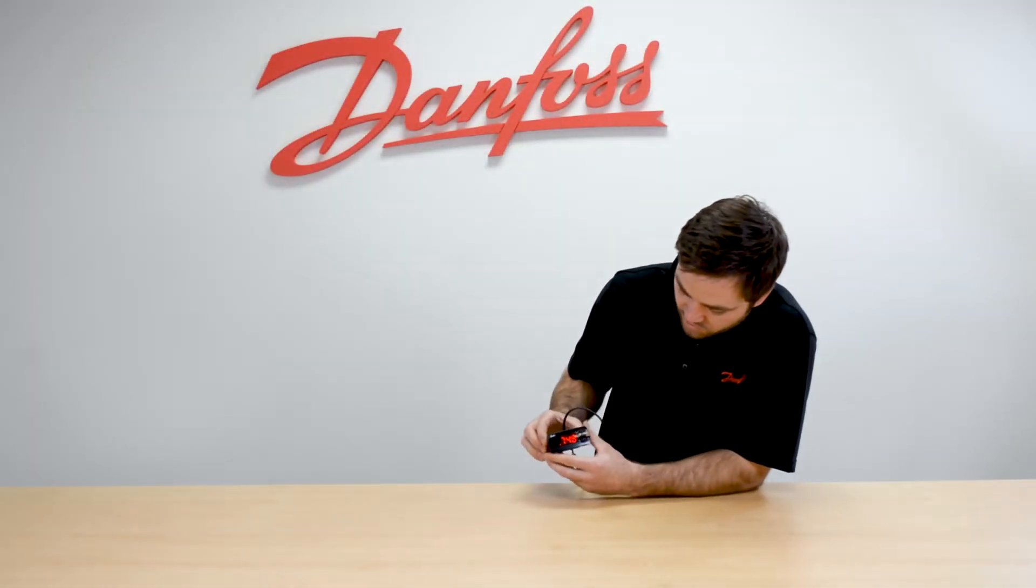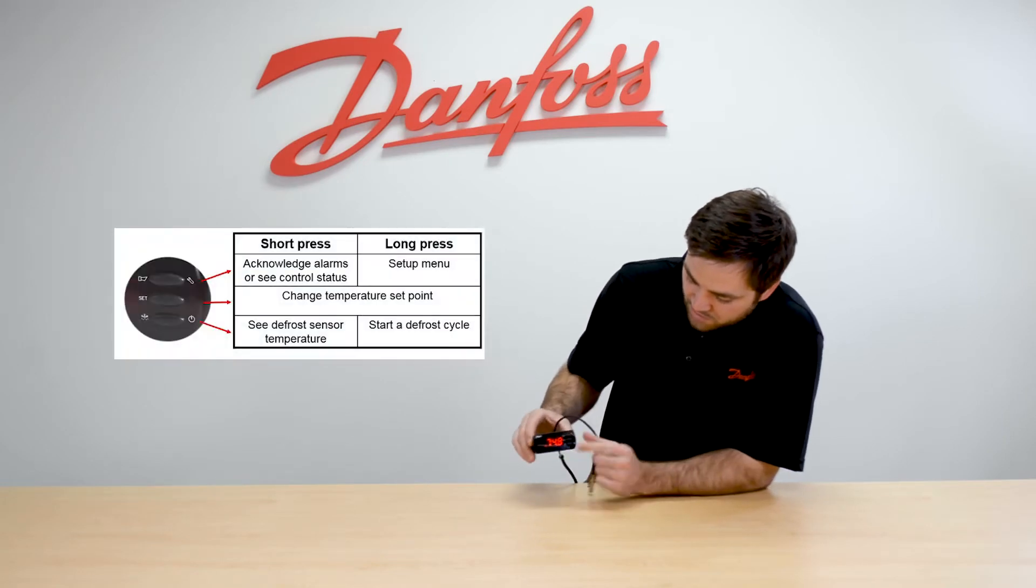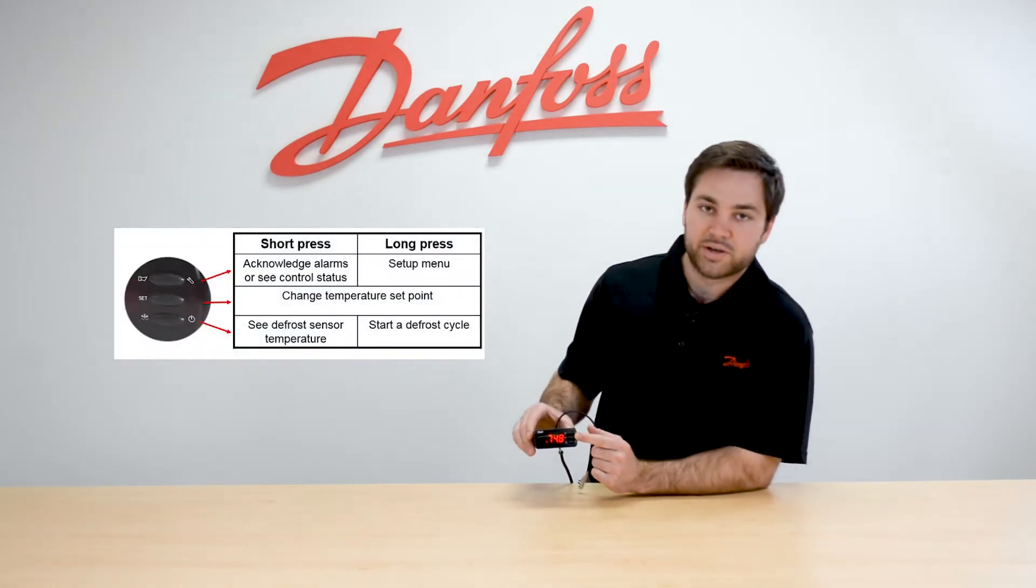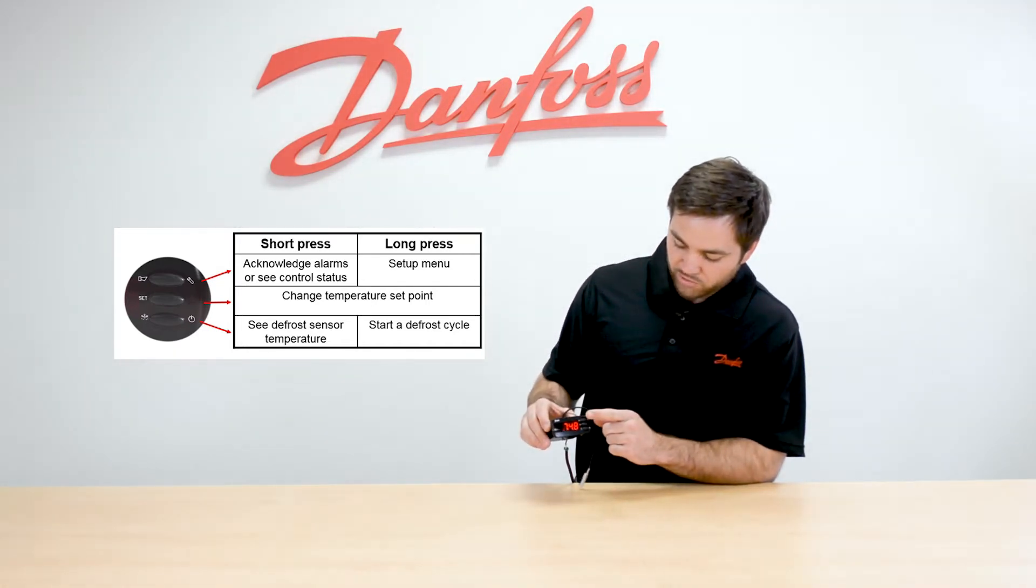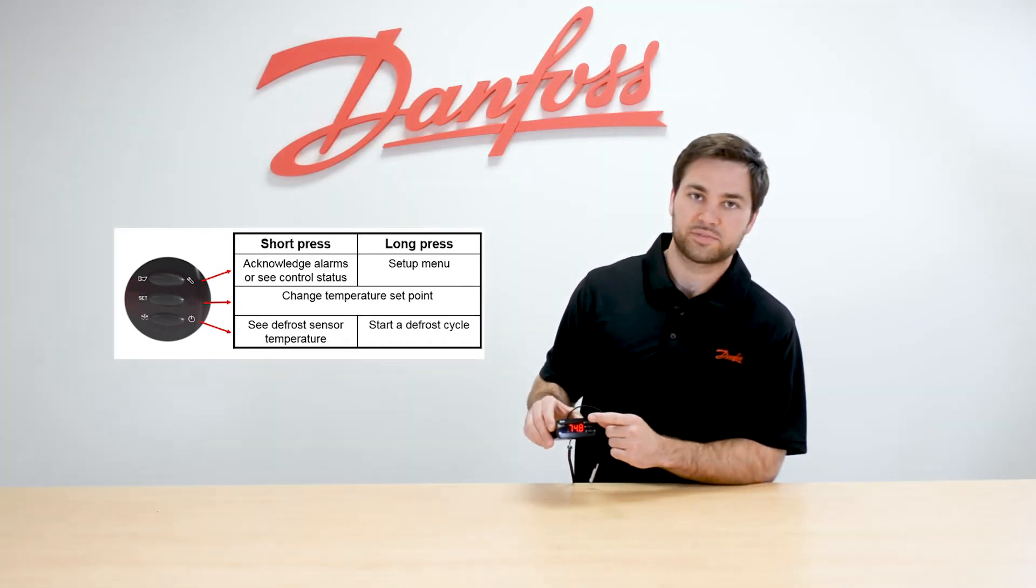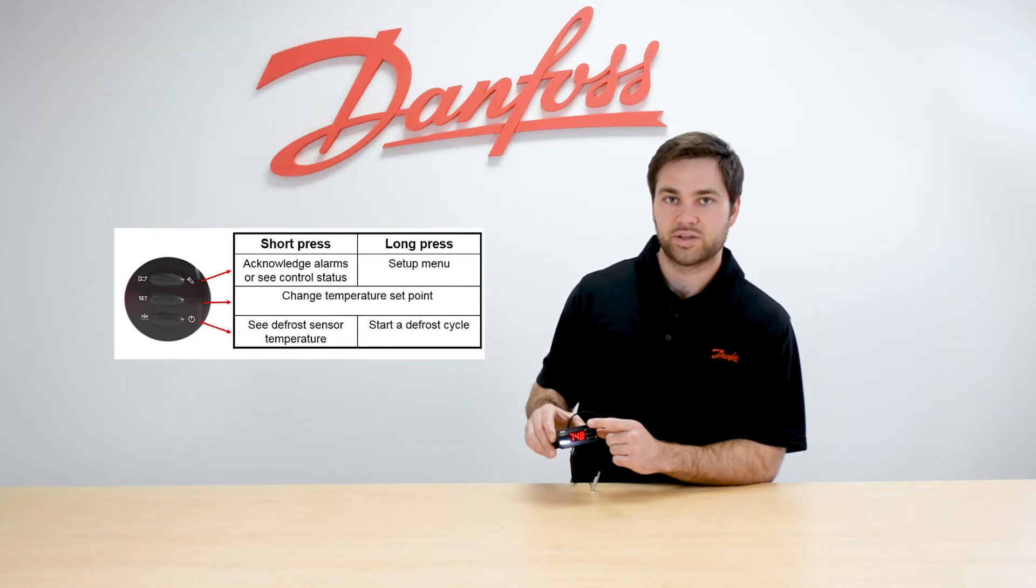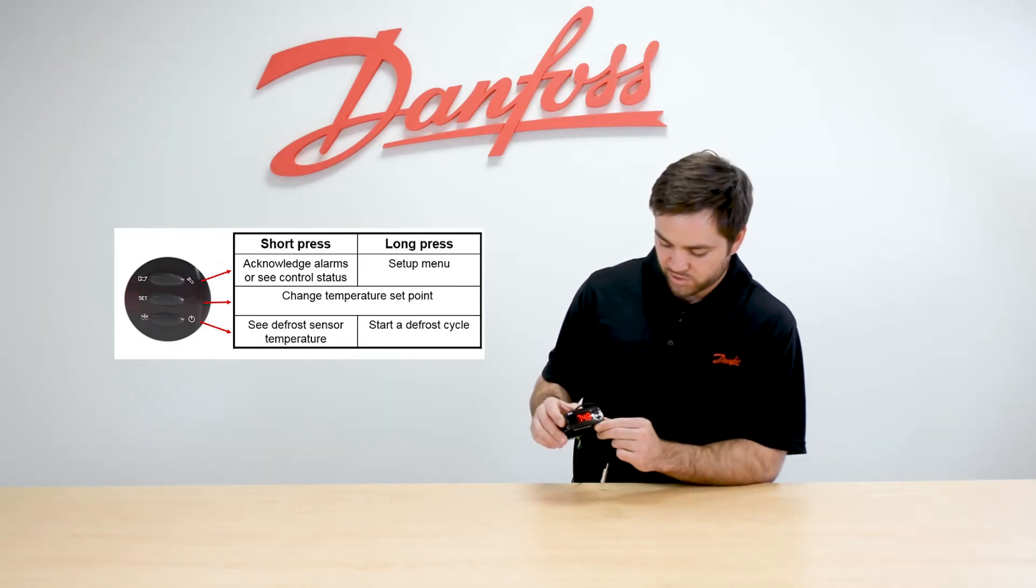As you can see on the front of the screen we have three buttons. You can do a simple press of the middle button to set the temperature, and if you want to go into programming mode you do a long press of the top button. As you can see on the screen here is how the button operation works.